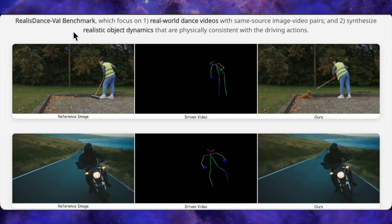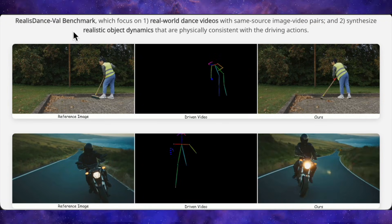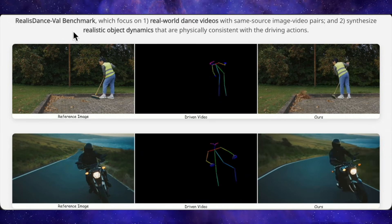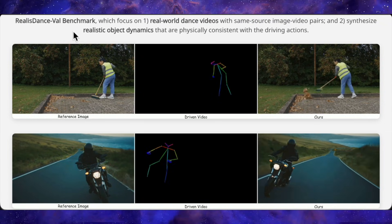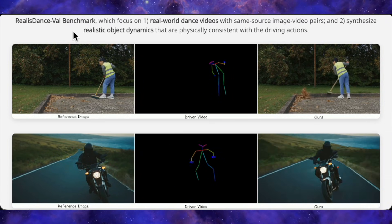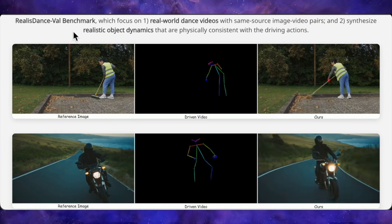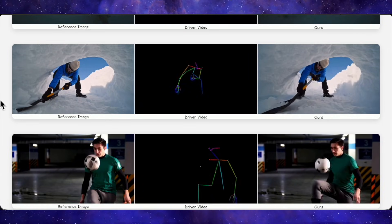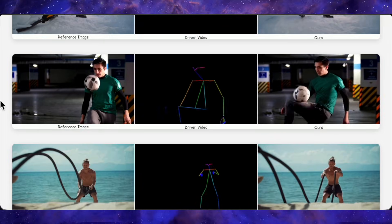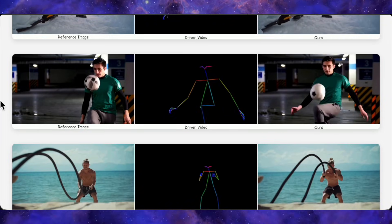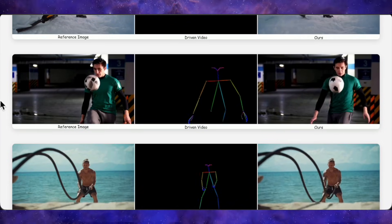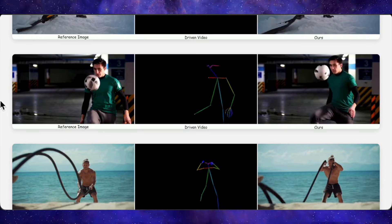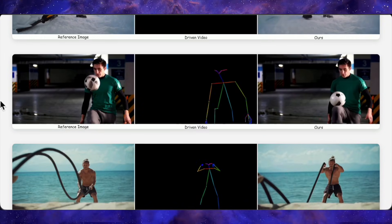In their examples, Steady Dancer can take a skeleton video of someone sweeping and a static image of a man holding a broom, and the output shows him sweeping while leaves realistically fly away, which means the model is inferring object motion from just the human pose. They repeat that with a man shoveling snow, a footballer interacting with a ball, and a guy working battle ropes on the beach — and Steady Dancer not only controls the human body accurately, but also generates plausible object motion and deformation, while other methods either freeze the objects or break them into nonsense shapes.